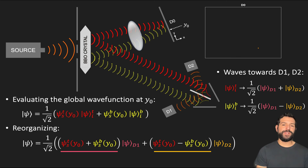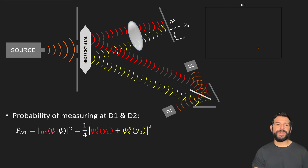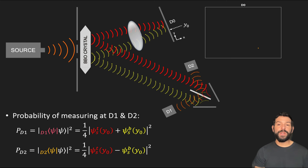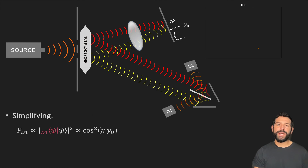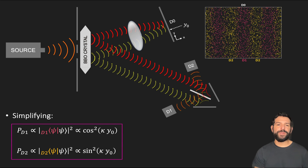These can then be used to determine the probabilities of measuring the information photon at D1 and D2, which again, under the assumption of dealing with plane waves at the screen, clearly shows that these probabilities depend on the cosine squared and sine squared of the location where the screen photon was detected in D0.